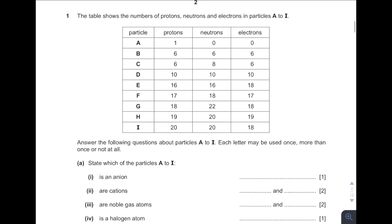We are given with the tables of these particles. See first, which one is an anion. What is an anion? Remember, anions are negative ions — negative ions that have more electrons compared to protons. So which one has more electrons? From the table, it is E: 18 electrons to 16 protons. So the answer is E.